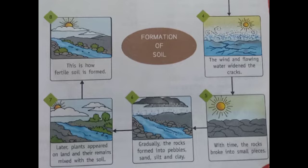Later, plants appeared on land and their remains mixed with the soil — this is how fertile soil is formed. When the earth was formed, there were only water, air and hard rocks. The sun heated the rocks, the rain made them cold, and the wind blew over them. This continued for thousands of years. As a result, the rocks broke into small pieces, which were carried by wind and water and rubbed against each other until they became tiny particles. It took millions of years for these tiny particles to change into the loose material we call soil.